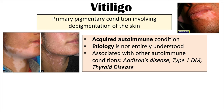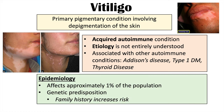The etiology — the underlying cause as to why this occurs — is not entirely understood. It is associated with other autoimmune conditions, including Addison's disease, type 1 diabetes, and thyroid disease. This condition is estimated to affect approximately 1% of the population. There does seem to be a genetic predisposition, so having a first-degree relative — such as a parent — with this condition puts you at higher risk than the general population.